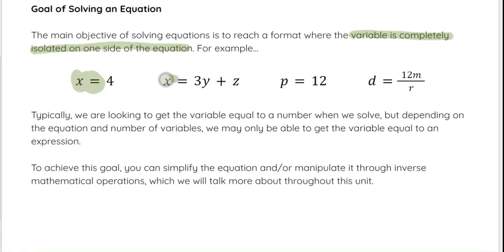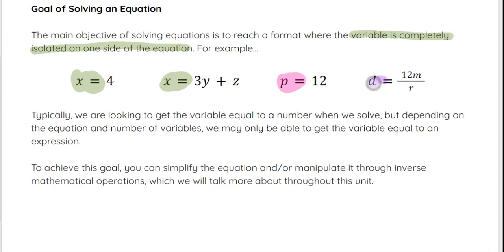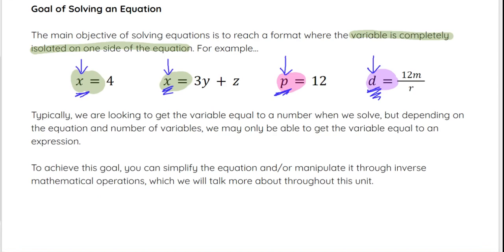For example, x equals 4, x equals 3y plus z, p equals 12, or d equals 12m over r. Sometimes there's a number on its own on the other side; sometimes there's an expression. But notice that all of these have a single variable by itself on one side. Typically we want the variable equal to a number, but depending on the equation and number of variables, we may only get the variable equal to an expression. To achieve this, we simplify and manipulate through inverse operations.